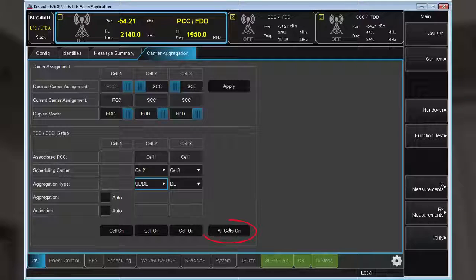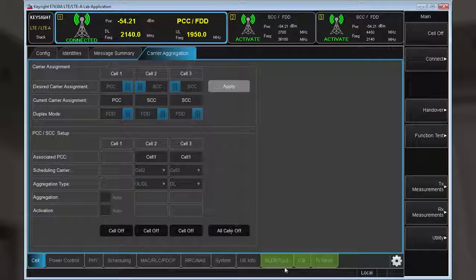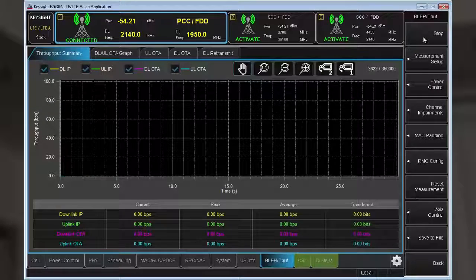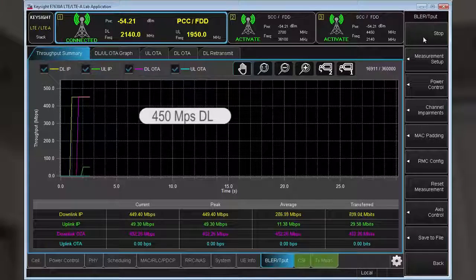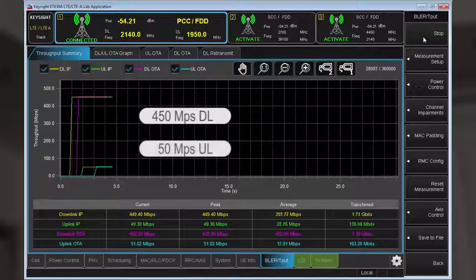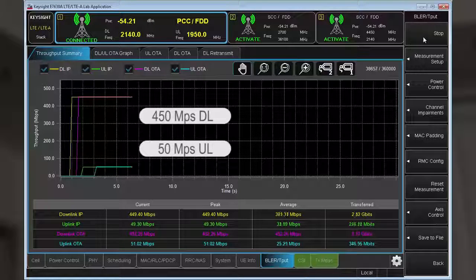Simply press the all cell on button and you're able to now analyze the data throughput, which in this case is 450 megabits per second downlink and 50 megabits per second uplink with three component carriers.